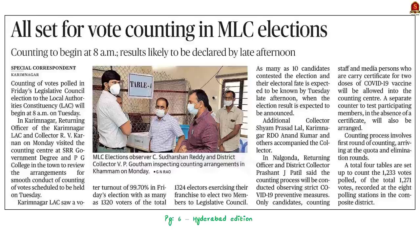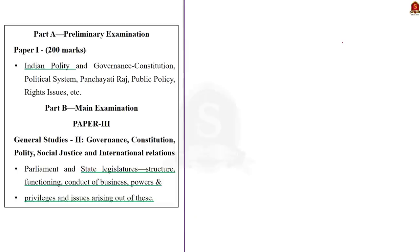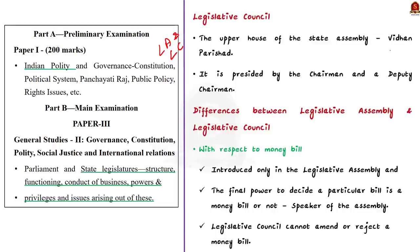Look at this news article. It talks about the counting of votes for the legislative council elections. In this context, let us revise the various differences between legislative assembly and legislative council. Legislative council is also known as Vidhan Parishad. It is the upper house of the state assembly. The presiding officer of the legislative council is its chairman. We will now see some important differences between the legislative assembly and legislative council.